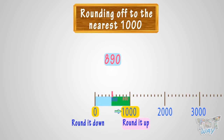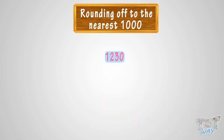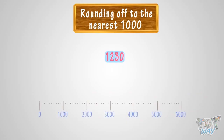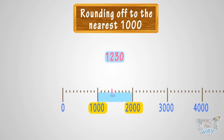Now let's take another example: 1230. We have to round 1230 to the nearest 1000. Where can you fit 1230 on this number line? It is somewhere between 1000 and 2000. As 1230 is below or before the 500 mark, so we will round it down to 1000.